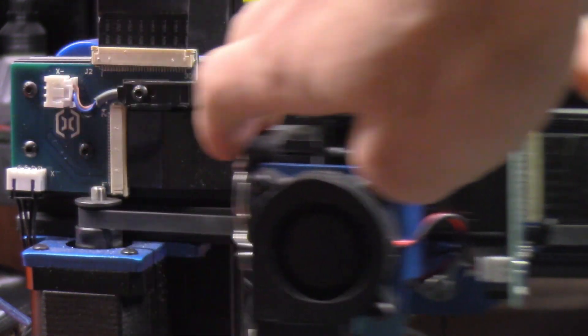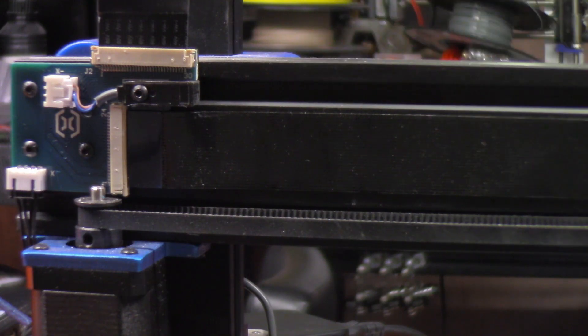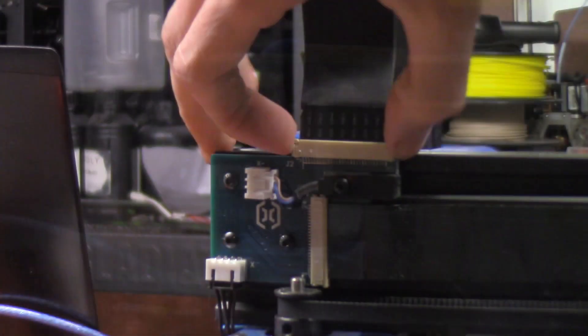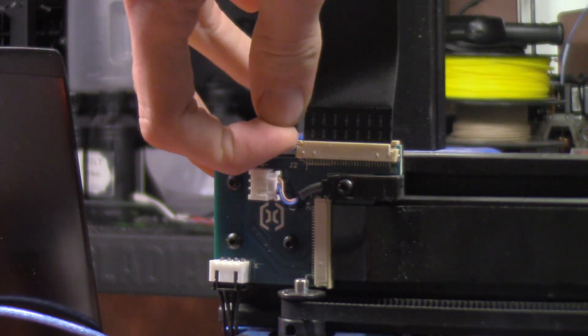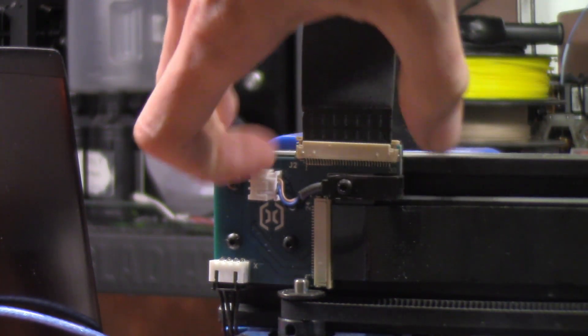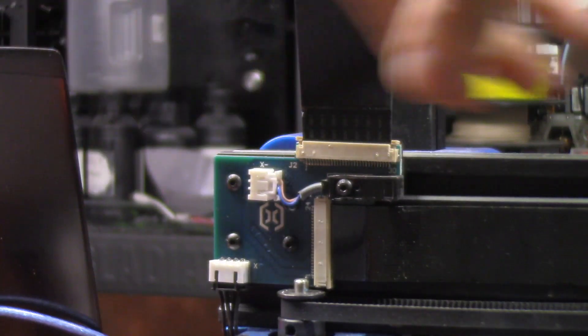Now I'm also going to show you what to do for the Z axis side over here. So for that, the process is the same, except you're going to want to stick your fingernails underneath these two little locking tabs and pull them up.